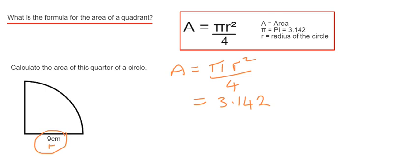And we've got that times 9 squared and then we divide the answer by 4.